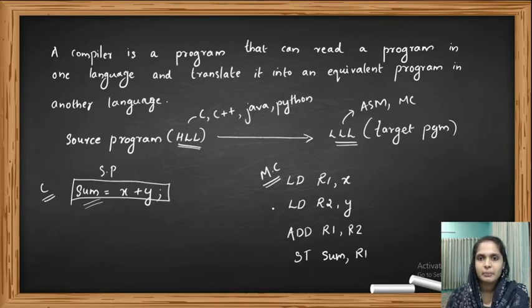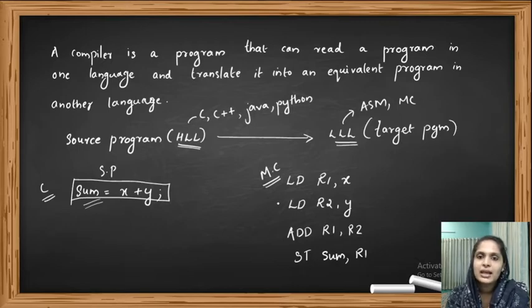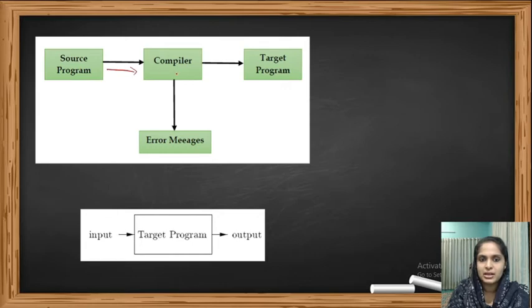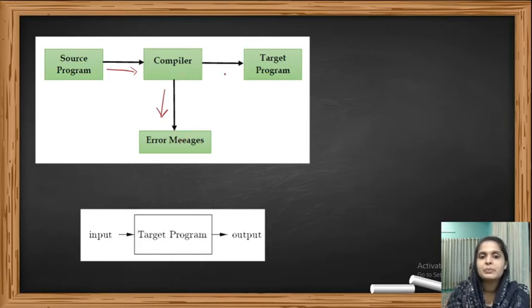One important feature of the compiler is that during the translation process, if it finds any errors it will report those errors to the user by displaying error messages. So the user can identify what errors are in the program and rectify them. The source program is fed to the compiler, which does the translation, and if it finds any errors those error messages are displayed to the user. Once all errors are corrected the compiler will produce the target program.